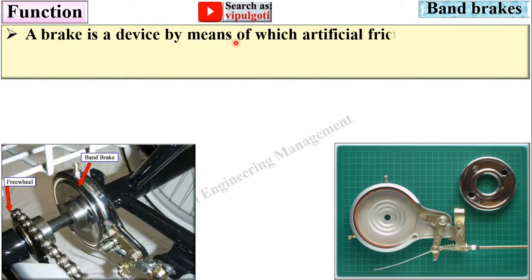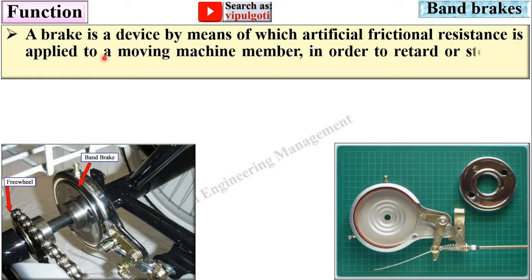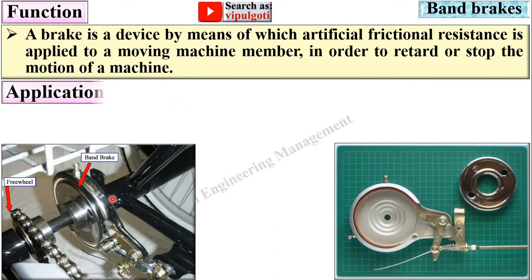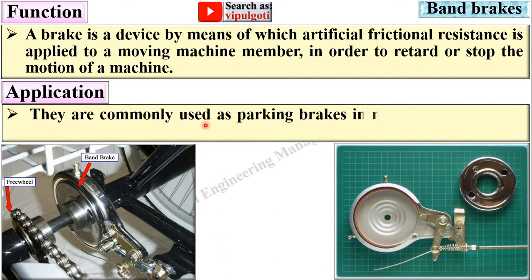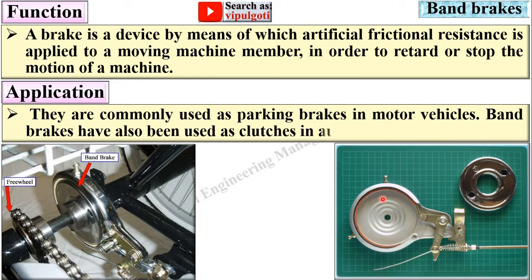A brake is a device by means of which artificial frictional resistance is applied to a moving machine member in order to retard or stop the motion of a machine. They are commonly used as parking brakes in motor vehicles. Band brakes have also been used as clutches in automatic transmission devices.